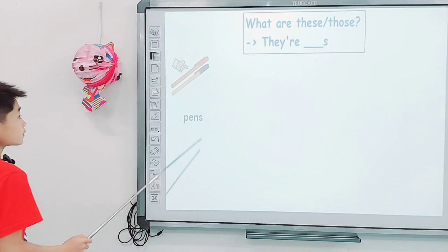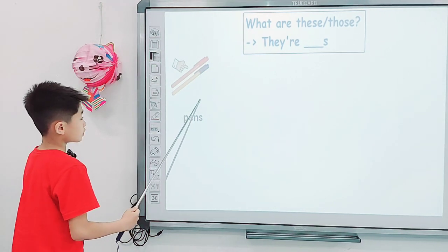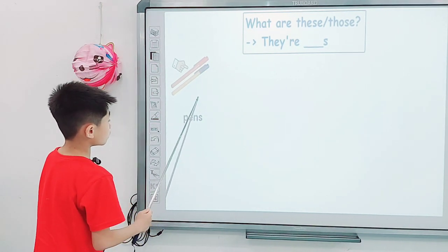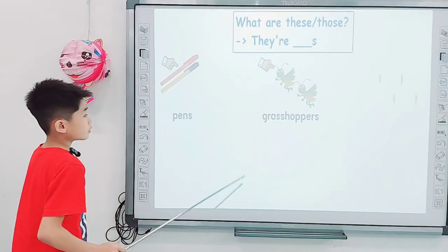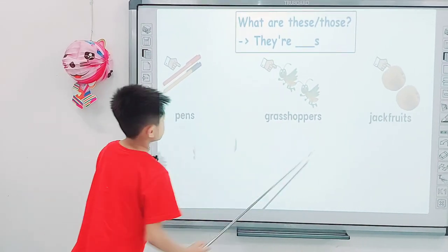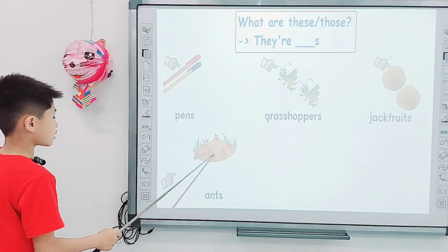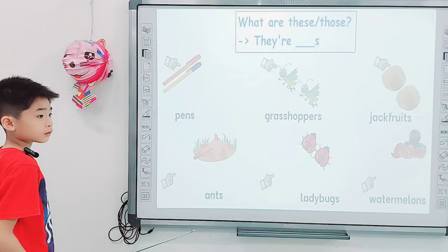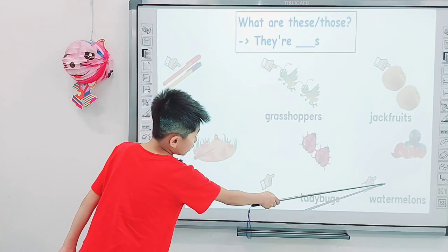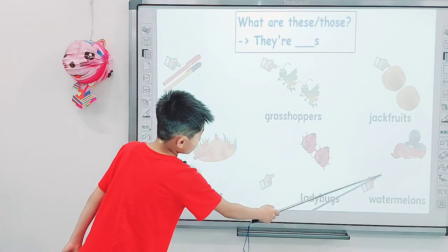And next one, tell me what are these? They're beans. And what are these? They're grasshoppers. And what are these? They're dragon fruits. And what are those? They're ants. And what are those? They're ladybugs. What are those? They're watermelons.